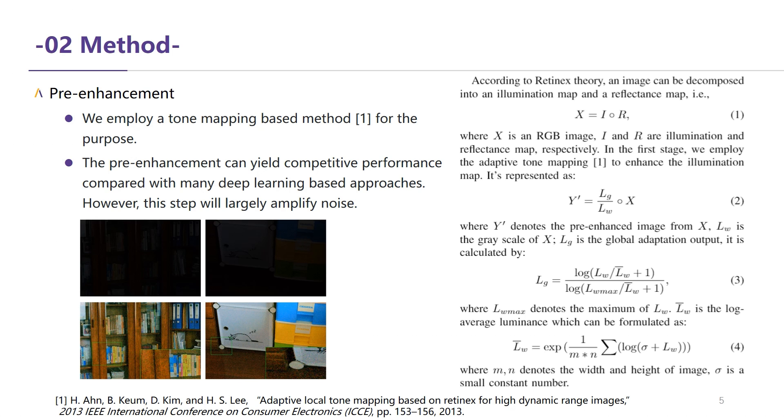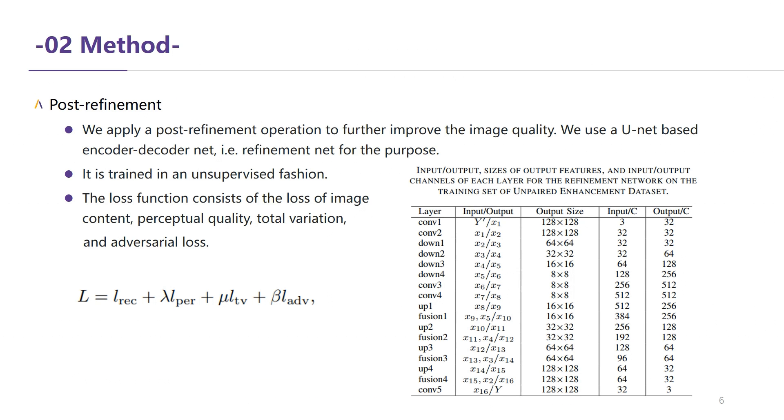Therefore, we apply a post-refinement operation to further improve the image quality. We use the refinement network for this purpose. It is trained in an unsupervised fashion. The loss function consists of the image reconstruction loss, perceptual loss, total variation, and adversarial loss.